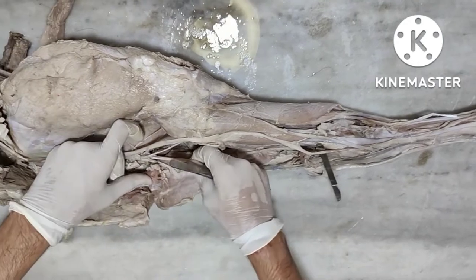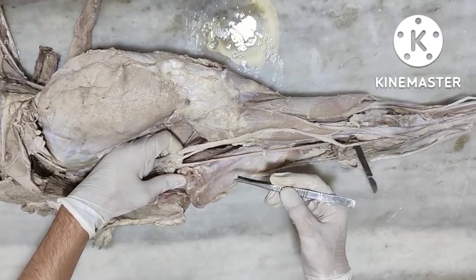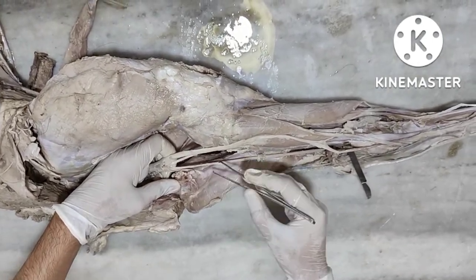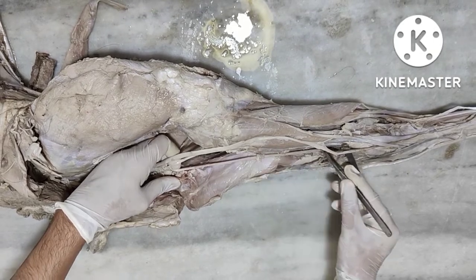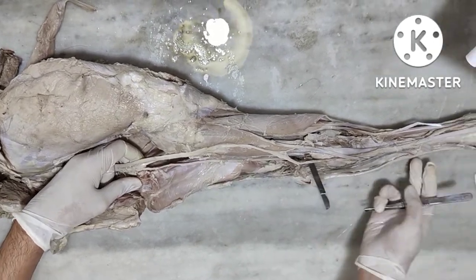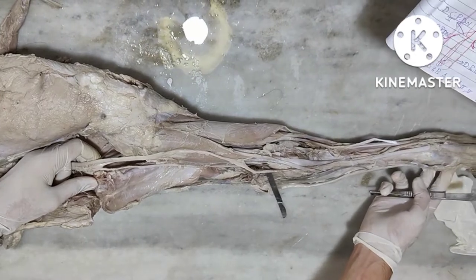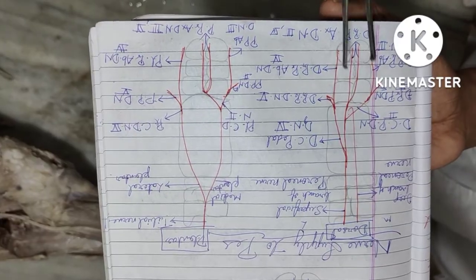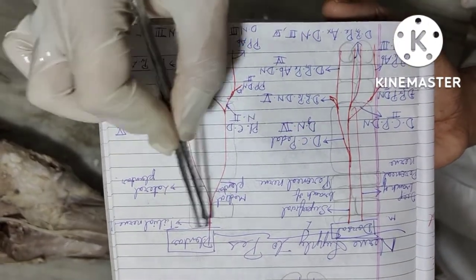The tibial nerve gives rise to the medial plantar and lateral plantar nerves, which continue distally to give branches to the digits.